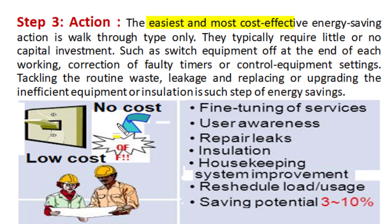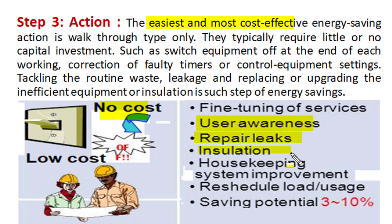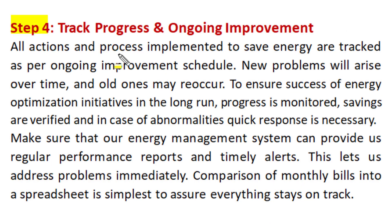The easiest and most cost-effective energy saving actions are walkthrough-type only, and simple user awareness can create a good amount of saving potential which typically requires little or no investment. These may involve switching equipment to off position at the end of each working day, correction of faulty timers, control equipment settings, repair of leaks, enhancement of weak insulations, good housekeeping measures, and system improvement where we can replace or upgrade inefficient equipment. These small actions have a saving potential of 3 to 10% of energy use without much investment.